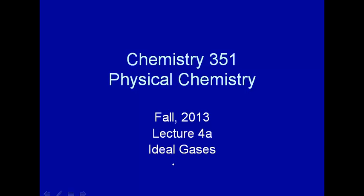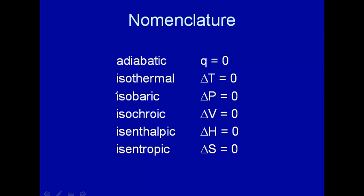But first, let's talk about some nomenclature. Here's some terms that we'll be using when we talk about thermodynamics. Some of them are fairly obvious and others perhaps are not. Let's first talk about adiabatic. Adiabatic means that q is equal to zero. So if you have an adiabatic process where you go from some initial state to some final state and no heat is transferred to or from the system, then that process is called an adiabatic process.